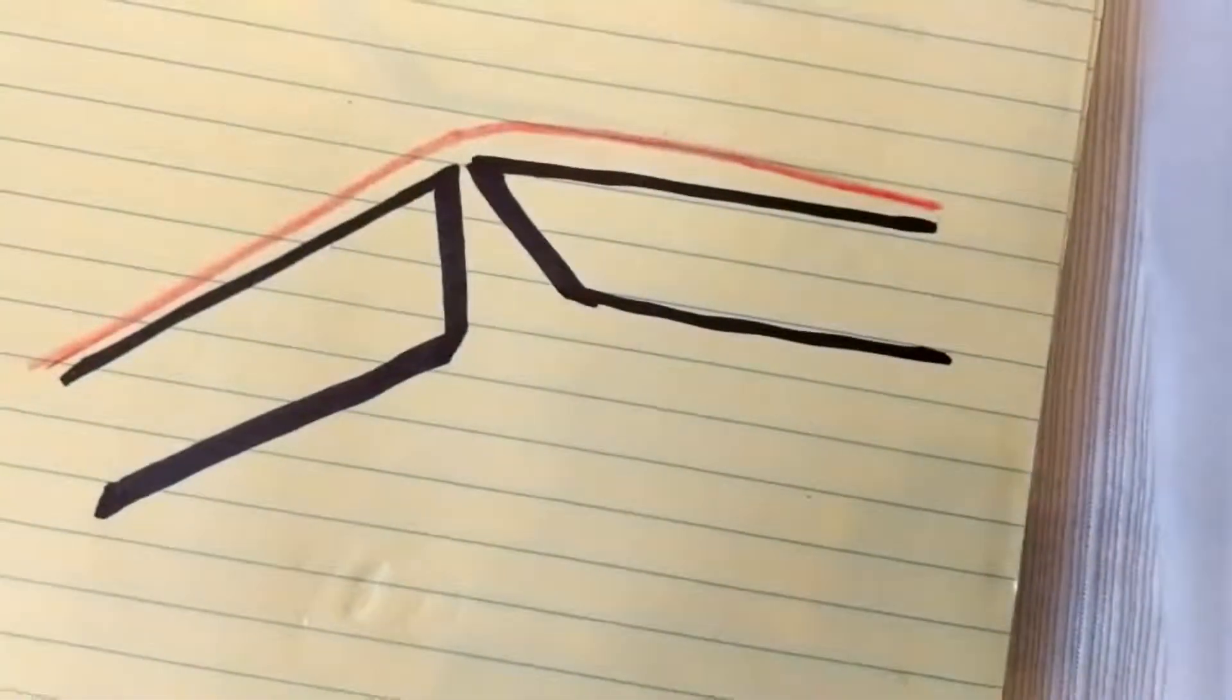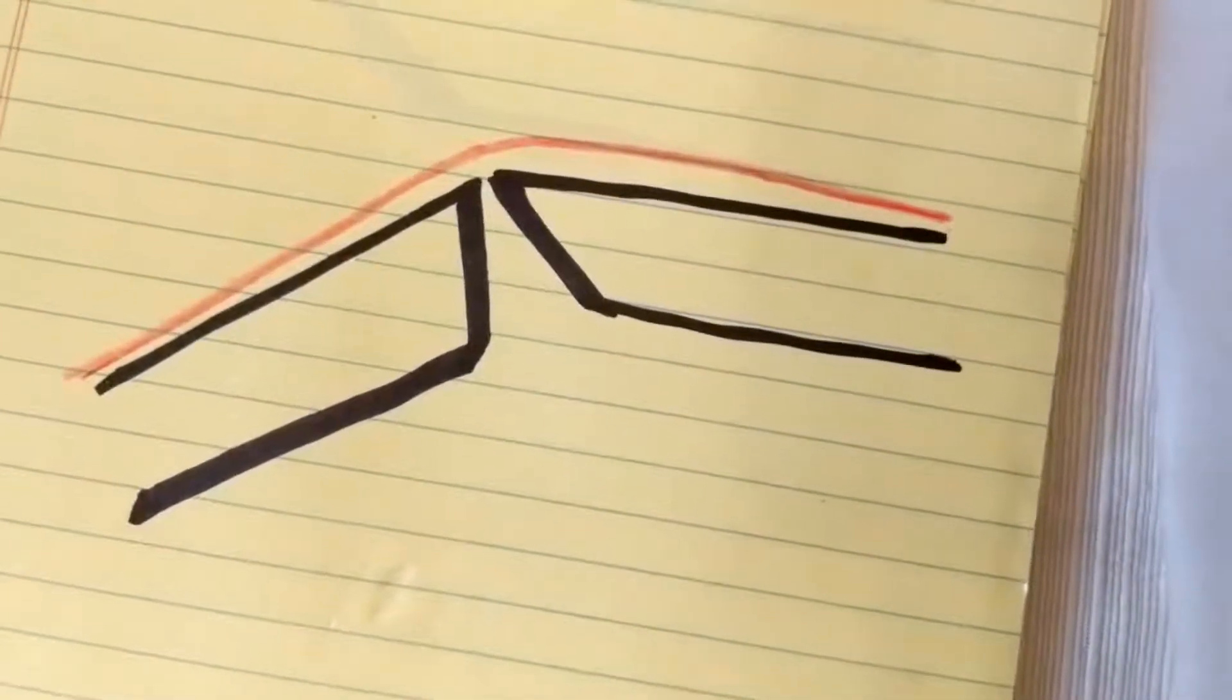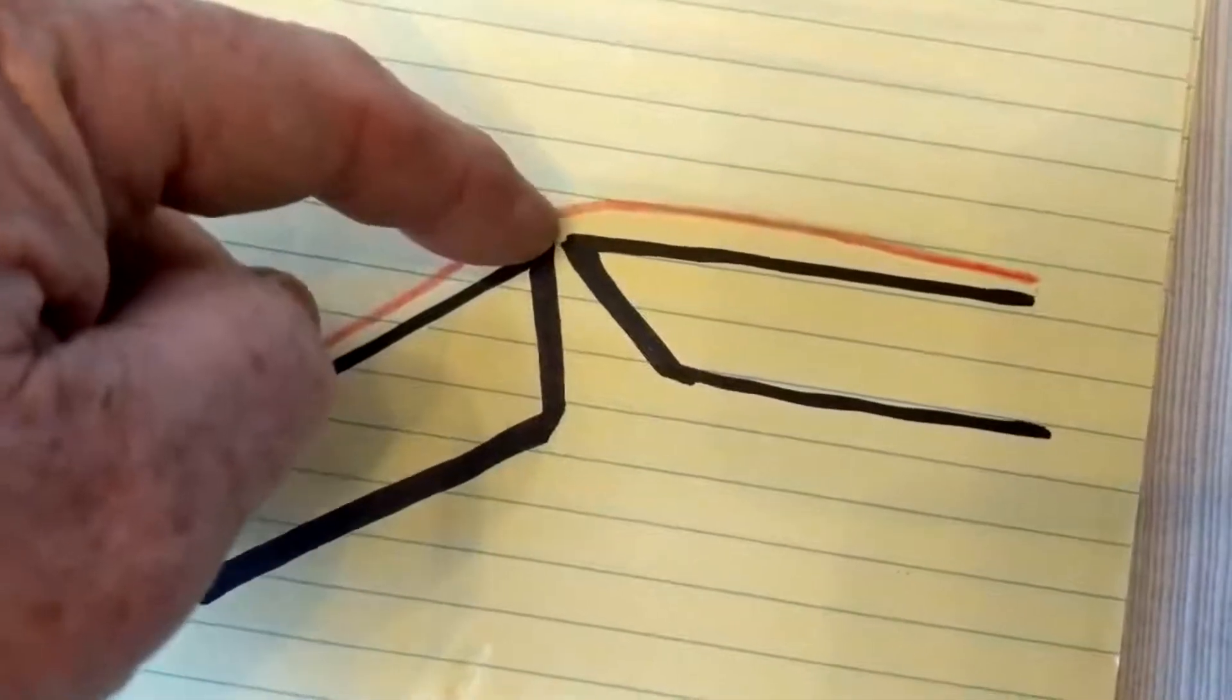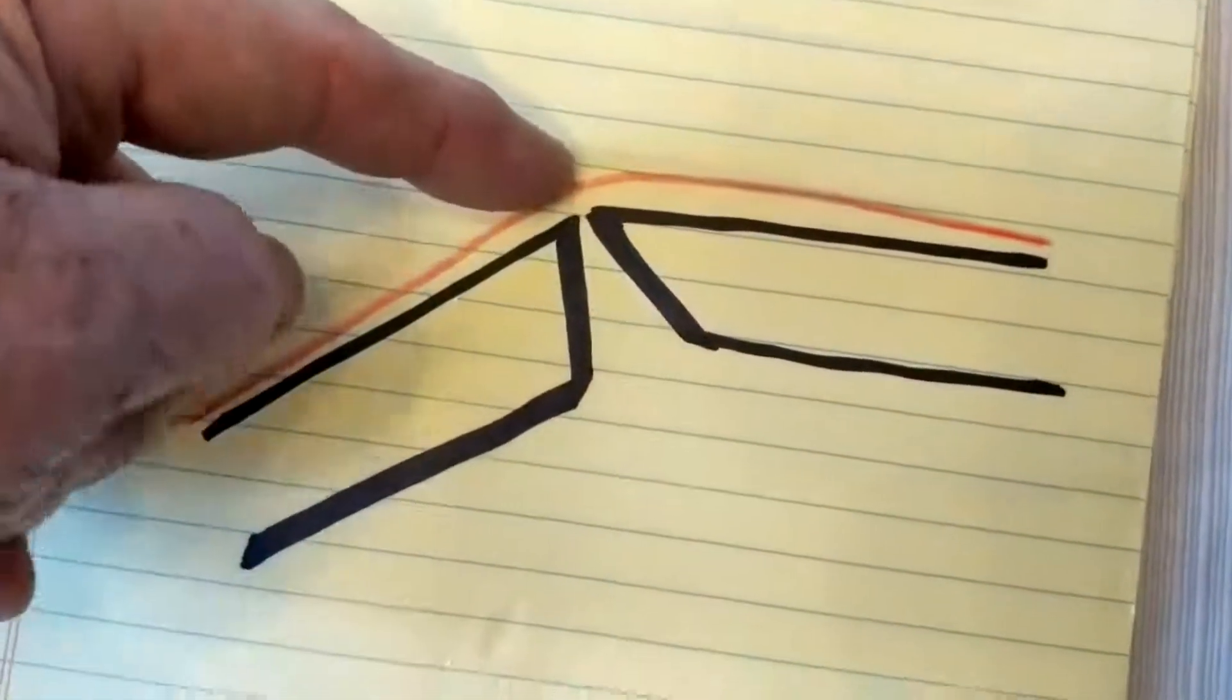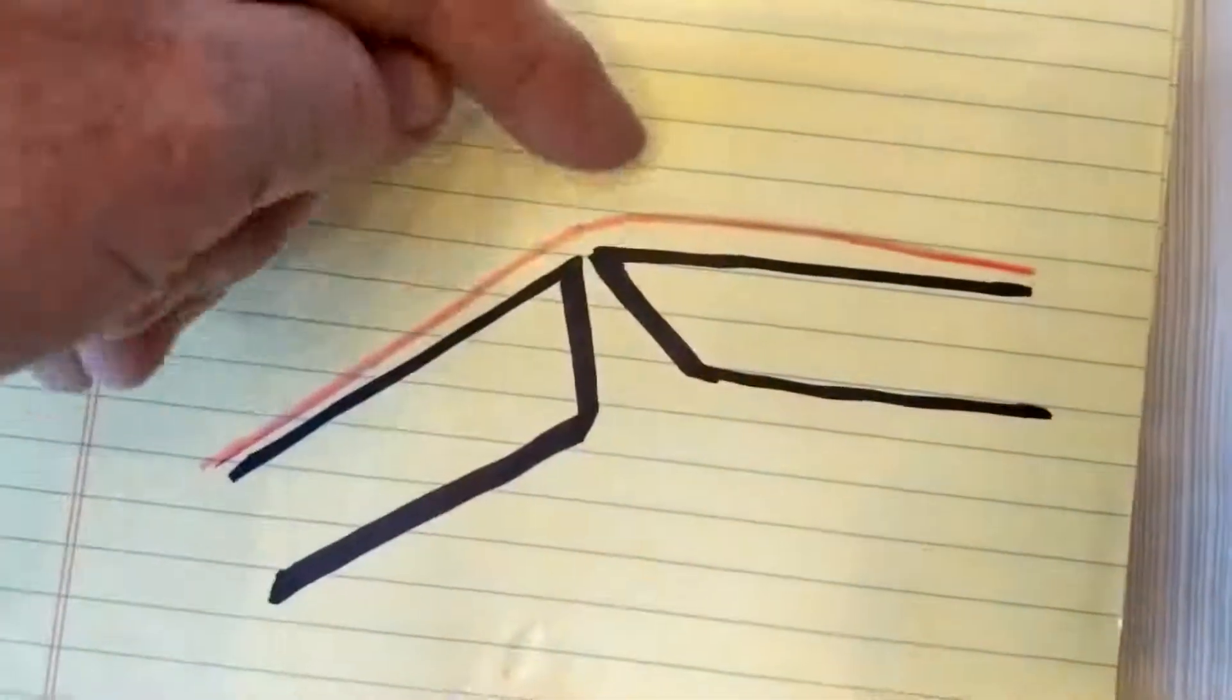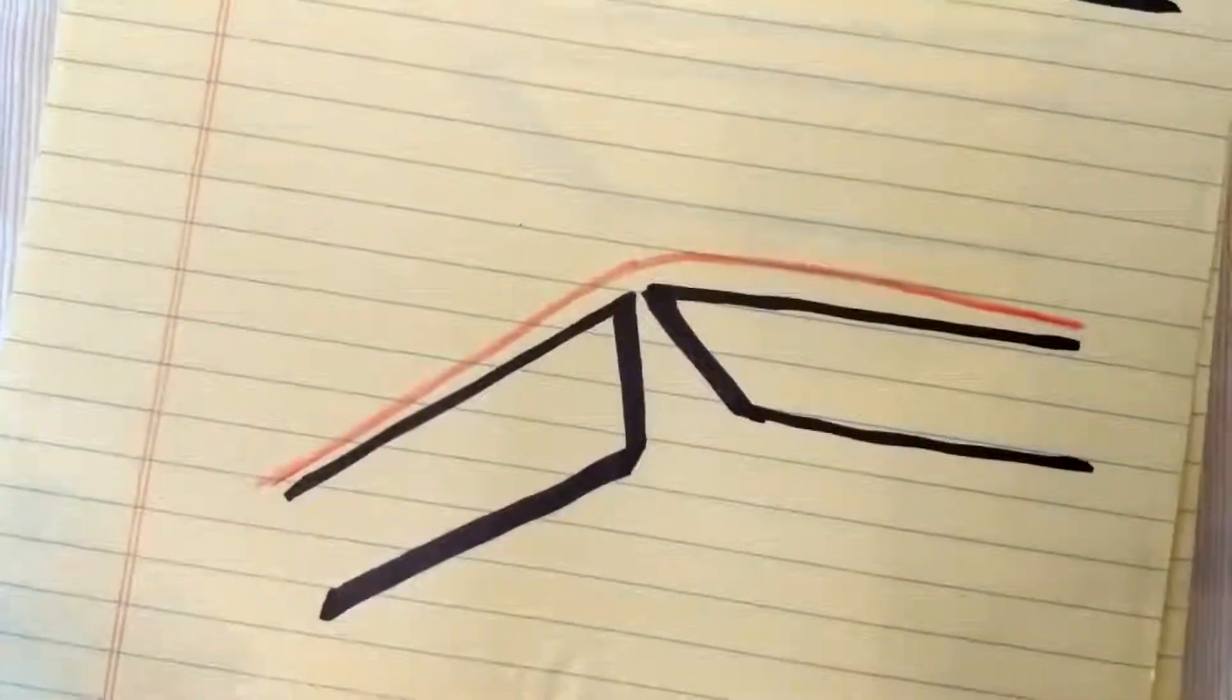And then what I do is after I've got them adequately ironed down, I will bend the piece and I'll use the iron across the area where it's going to hinge over the whole length. Or if I've got multiple hinges I do all of the hinges at once while I'm holding the piece bent. That lets the heat stretch out the hinge in the area where it's actually going to hinge.